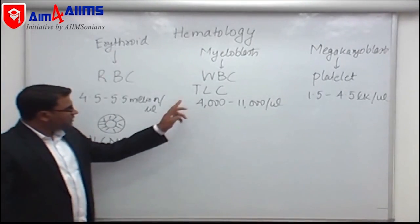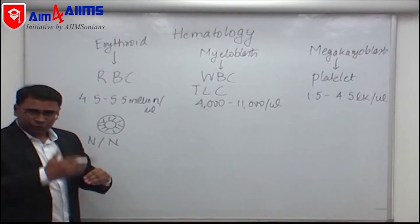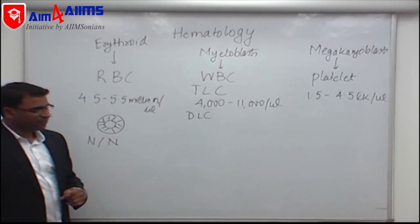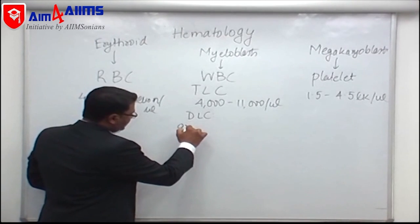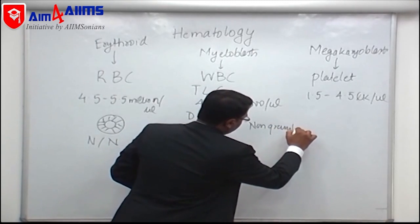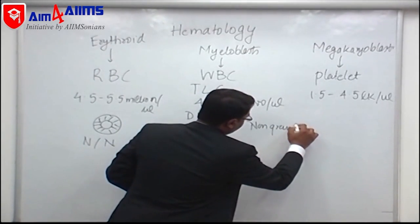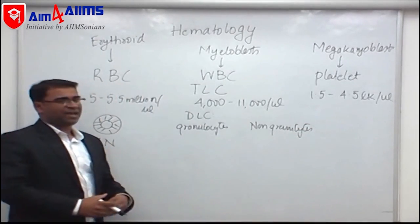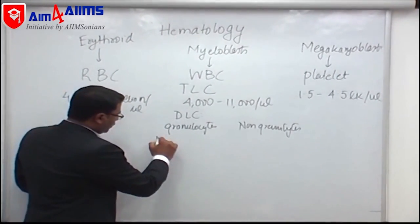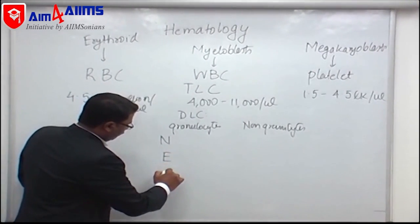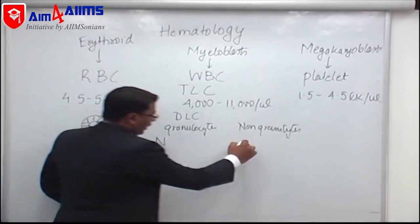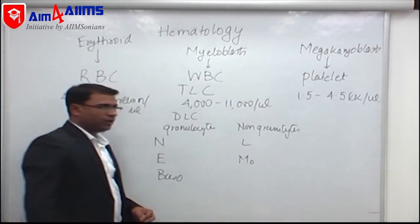This is the total leukocyte count, and when we differentiate leukocytes into different types of cells, we call that the differential leukocyte count (DLC). TLC has granulocytes and non-granulocytes. Cells which have granules are called granulocytes; cells without granules are called non-granulocytes. Granulocytes include neutrophils, eosinophils, and basophils. Non-granulocytes include lymphocytes and monocytes.